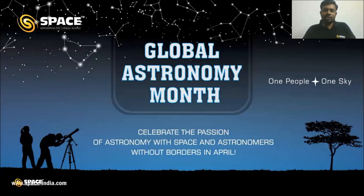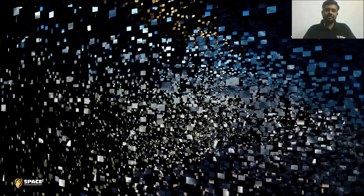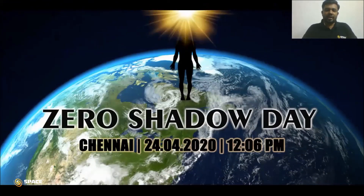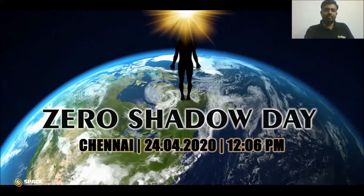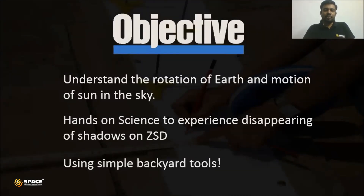We are celebrating Global Astronomy Month this April, and Chennai experiences Zero Shadow Day on April 24, 2020 at 12:06 PM. The objective of the session is to understand the rotation of the earth and the motion of the sun in the sky, and to get hands-on experience on the disappearing of shadows on Zero Shadow Day using simple backyard tools.